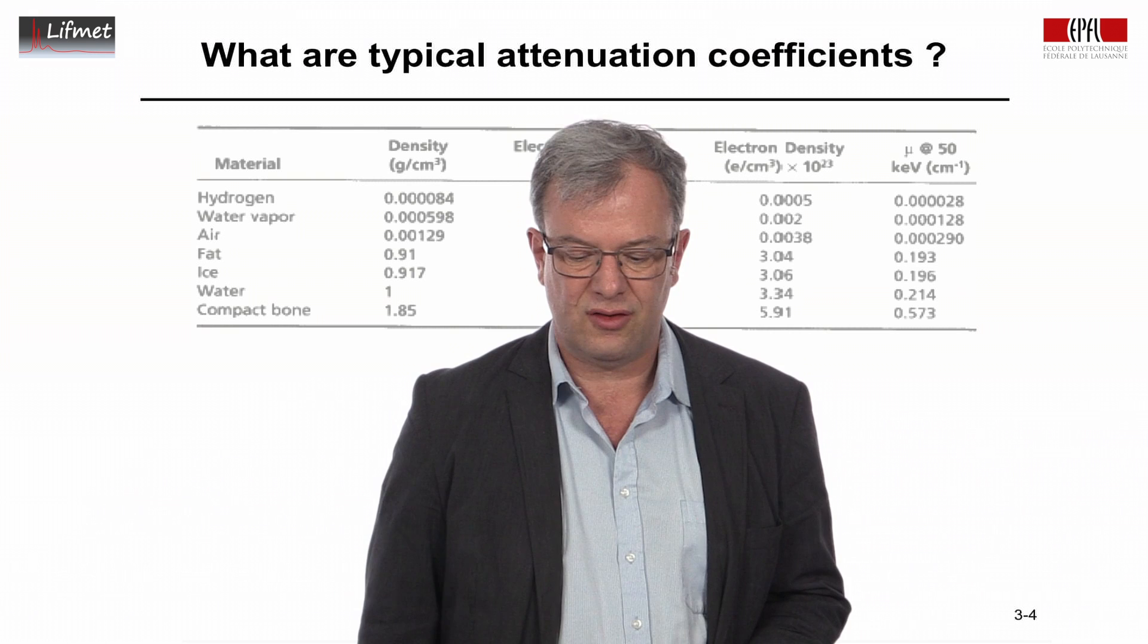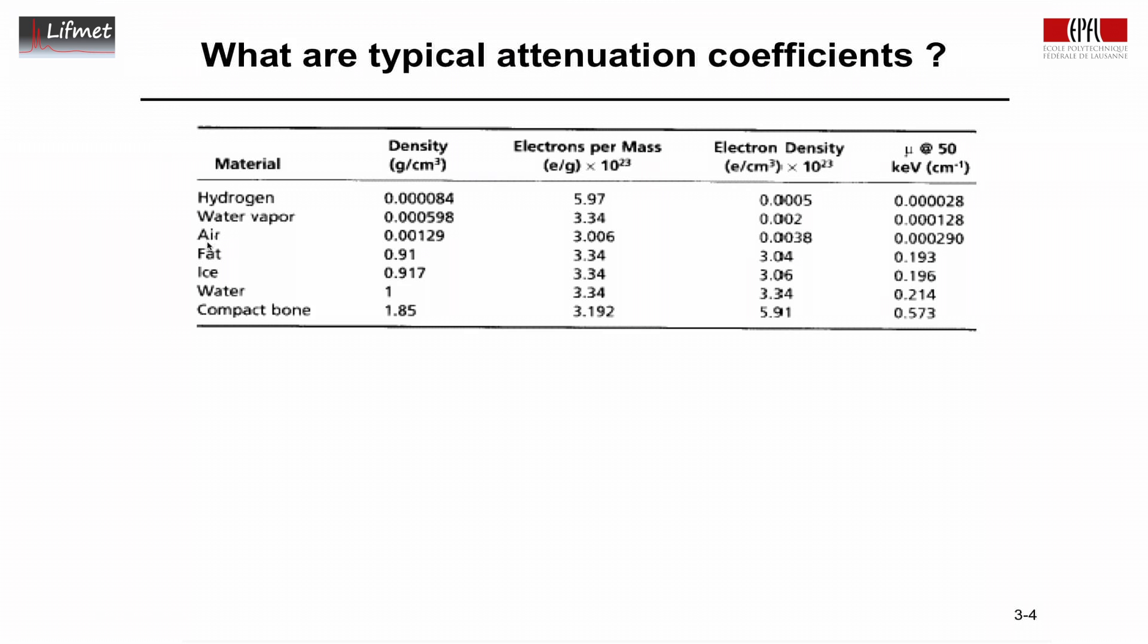So, let's look at the question, what are typical attenuation coefficients? We'll look at the linear attenuation coefficient for different materials, hydrogen, water, vapor. We have air, fat, ice, water, and compact bone. Here's the density of the tissue given in grams per centimeter. Here's the density of the electrons given, the electrons per mass, and then we have the electron density per volume is given here, and this is the linear attenuation coefficient. And we can see a close correspondence between the linear attenuation coefficient and the density of the electrons in the tissue.